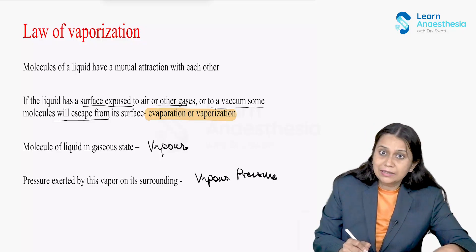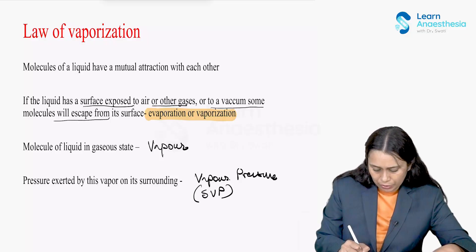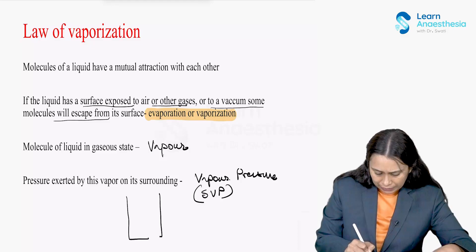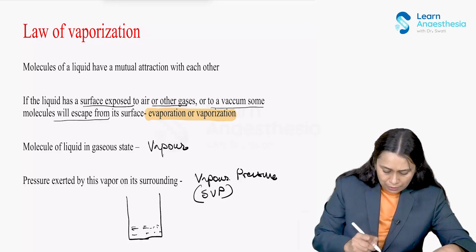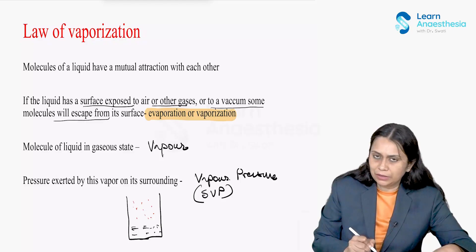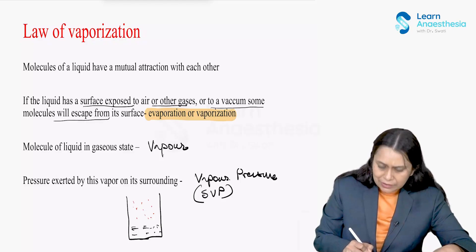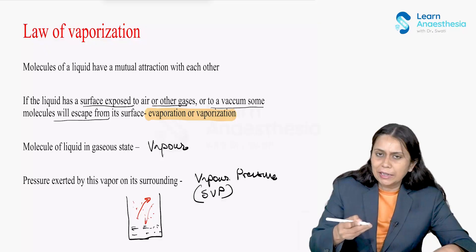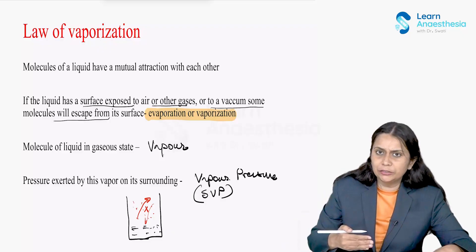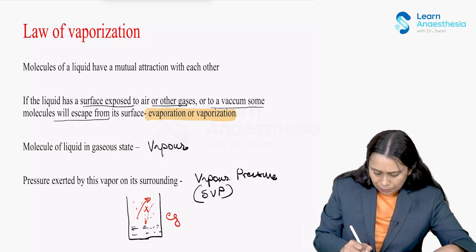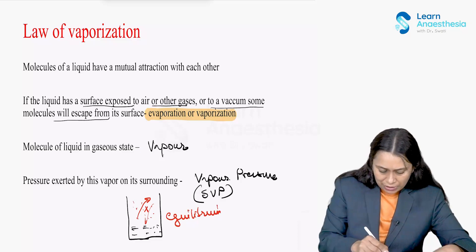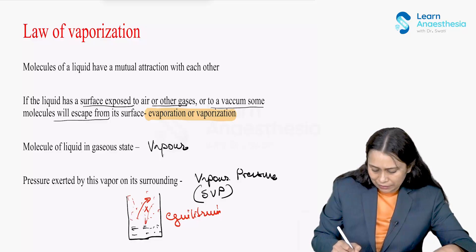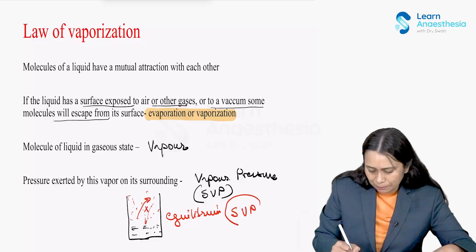We also need to understand saturated vapor pressure. Consider a closed container with liquid at a particular temperature. Some vapors are escaping the surface of the liquid, and some are also returning back. When this equilibrium — molecules escaping and molecules returning — becomes equal, the pressure applied by the vapors on the wall of the vessel at that particular temperature is called the saturated vapor pressure.